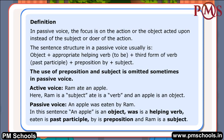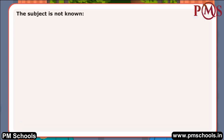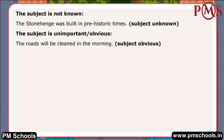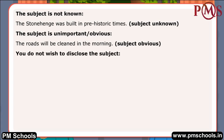We use passive voice when the subject is not known: 'The Stonehenge was built in prehistoric times' — subject unknown. The subject is unimportant or obvious: 'The roads will be cleaned in the morning' — subject obvious. You do not wish to disclose the subject: 'Raw eggs are also eaten' — subject not disclosed.